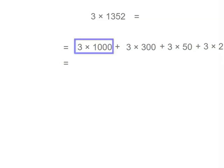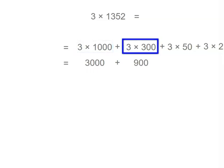Now if we work out each separate piece, we've got 3,000 plus 3 times 300 is 900, plus 3 times 50, which is 150, and 3 times 2, which is 6.